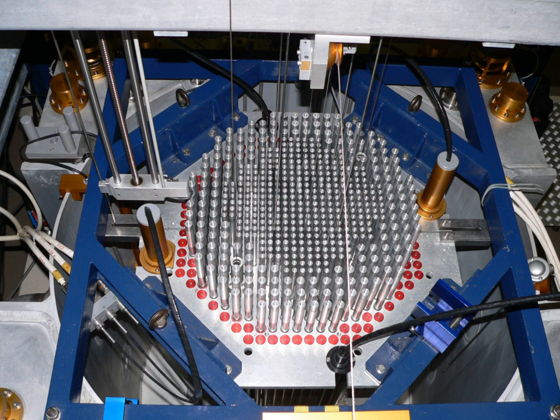The reactor core generates heat in a number of ways. The kinetic energy of fission products is converted to thermal energy when these nuclei collide with nearby atoms. The reactor absorbs some of the gamma rays produced during fission and converts their energy into heat.